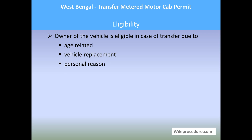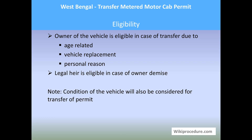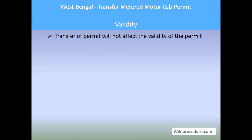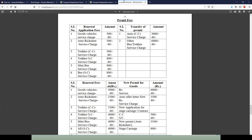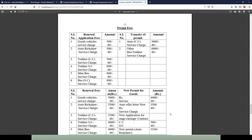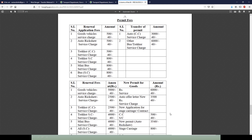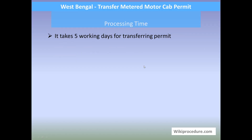Eligibility: the owner of the vehicle is eligible in case of transfer due to age-related vehicle replacement and personal reasons. Legal heirs are eligible in case of the owner's demise. The condition of the vehicle will also be considered for the transfer of the permit. Validity: the transfer of the permit will not affect its validity. Fees: the link provided below will help you reach a page with information related to the service fees. Processing time: it takes five working days to transfer the permit.